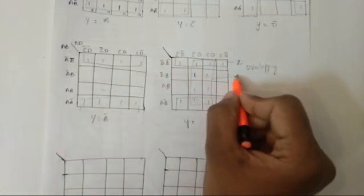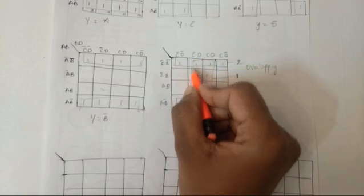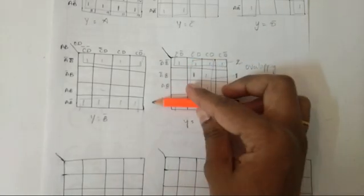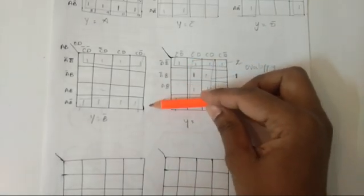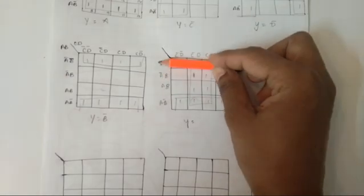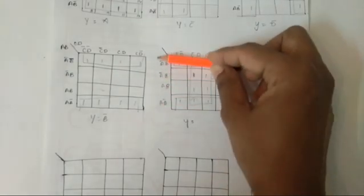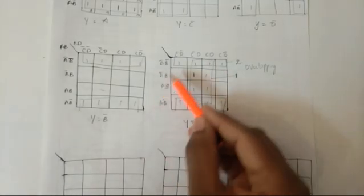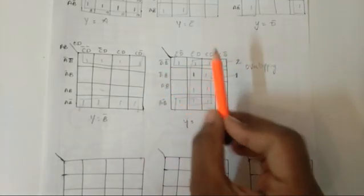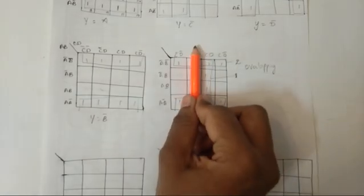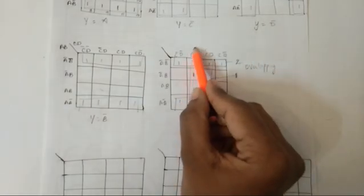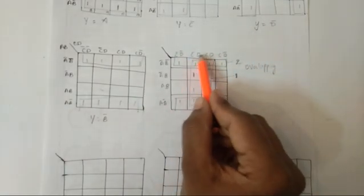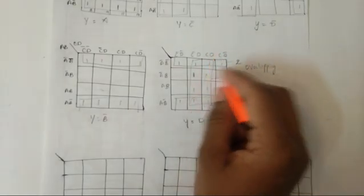For this overlapping case, the output y is equal to the following. For the first group, I look at these four terms. Since all four are encountered, they cancel each other. A-bar changes to A, and B-bar changes to B. For the first group only, these two remain: C-bar changes to C. D is not written.